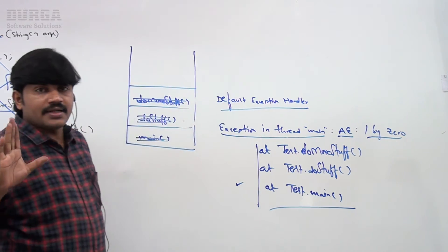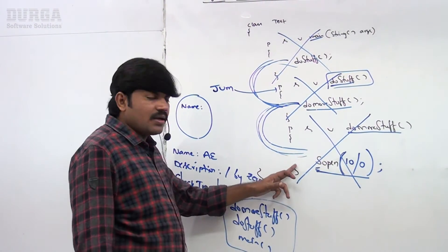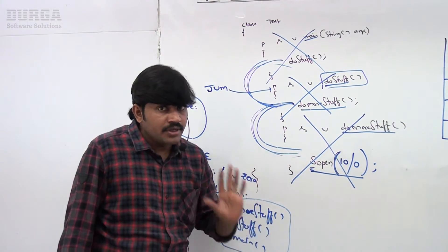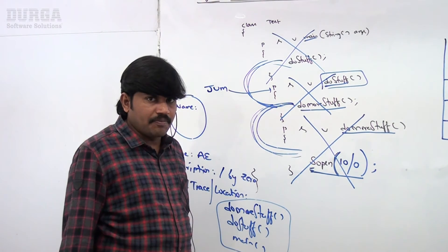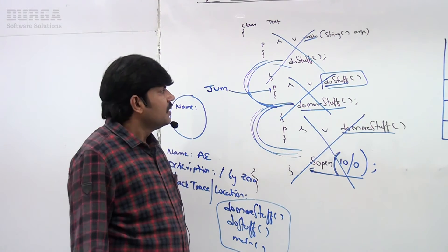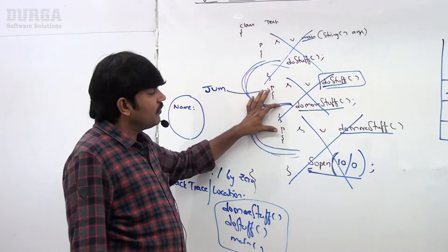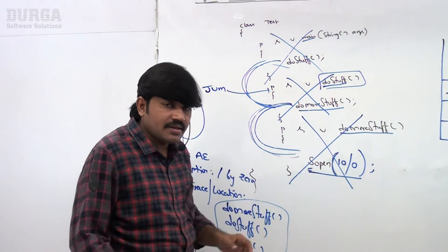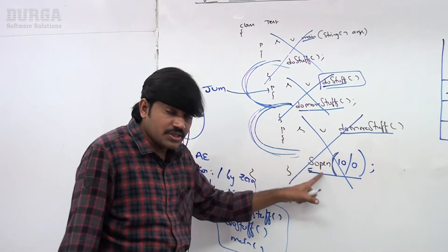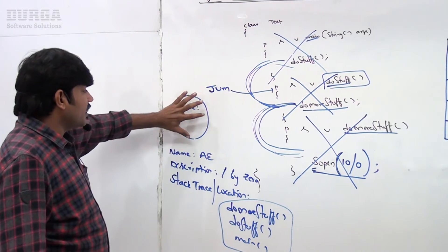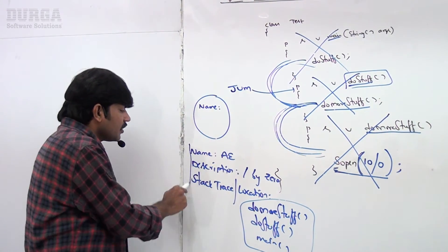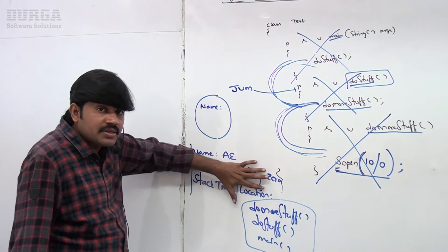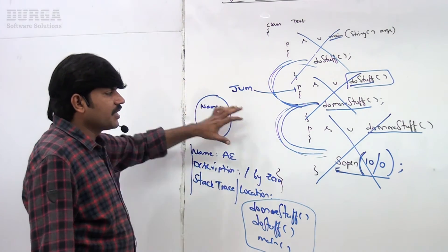So by default, if something goes wrong, this is what happens — this is default exception handling in Java. Briefly repeating: main calls doStuff, doStuff calls doMoreStuff, inside doMoreStuff ArithmeticException occurs. The method in which the exception rises is responsible to create the exception object, including: name of the exception, description of the exception, and stack trace.